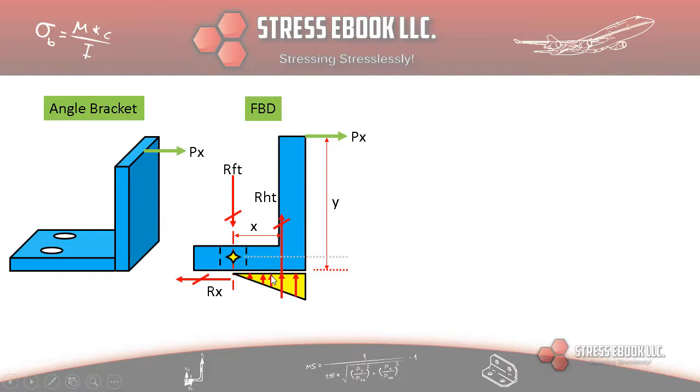Previously this triangular heel toe reaction was over here to the left of the fastener axis all the way to the edge of this bracket. But this time as you load it at the top to the right, this heel toe reaction is assumed to be under this bracket from the fastener increasing linearly all the way to the edge of this bracket.